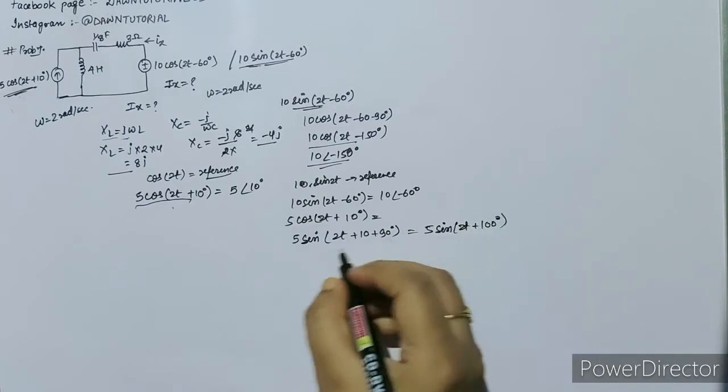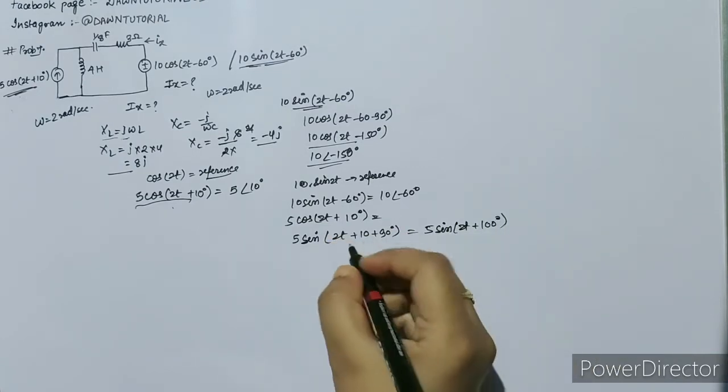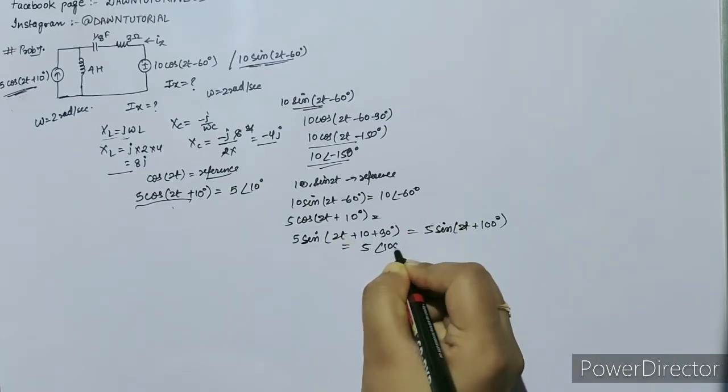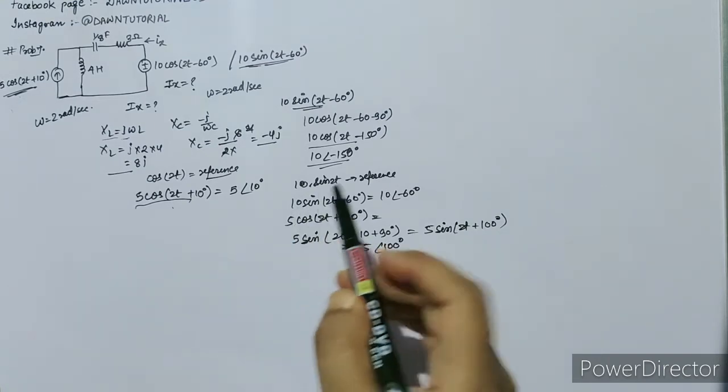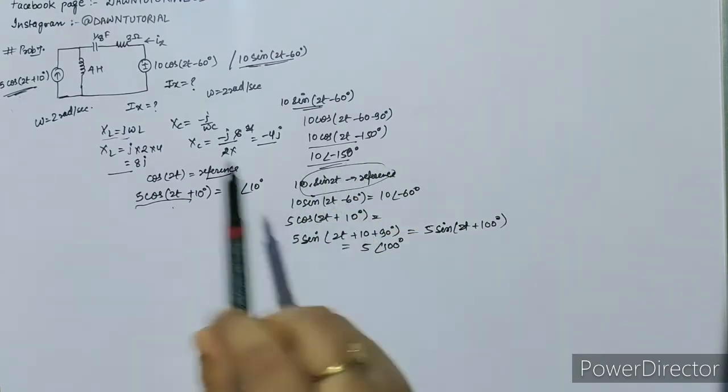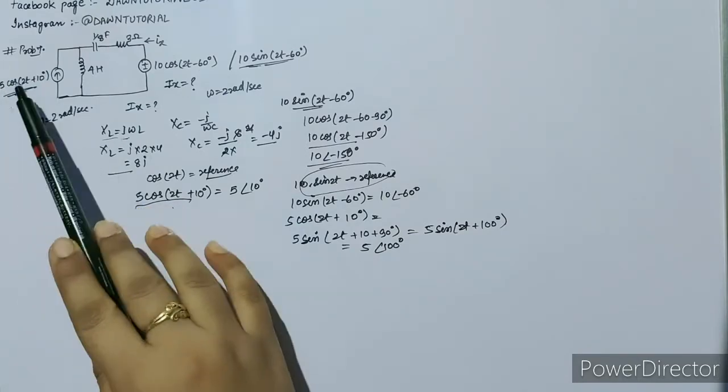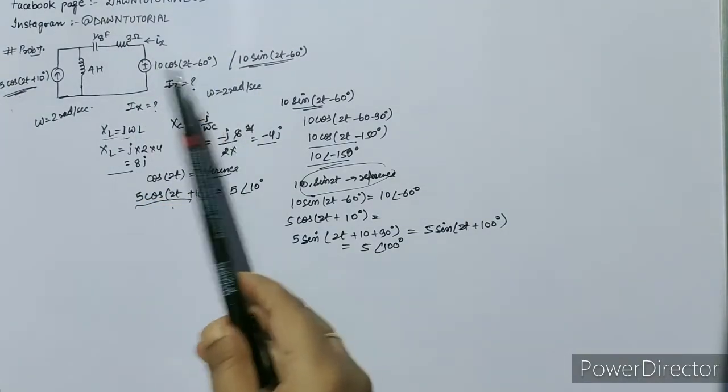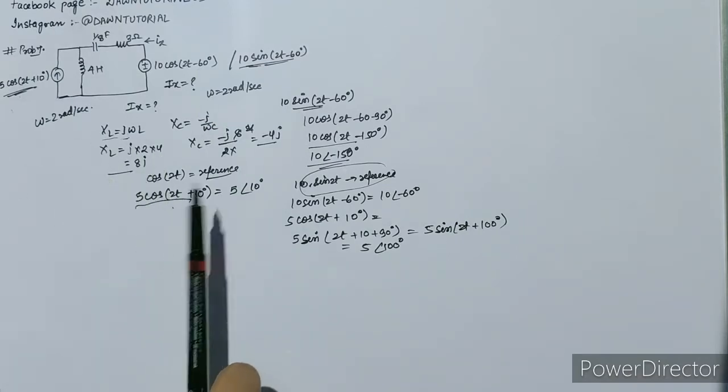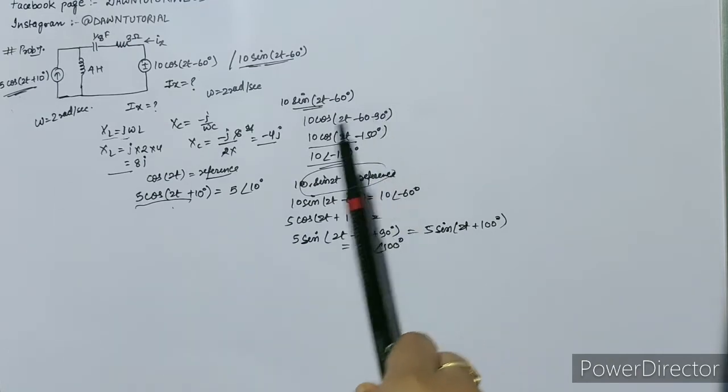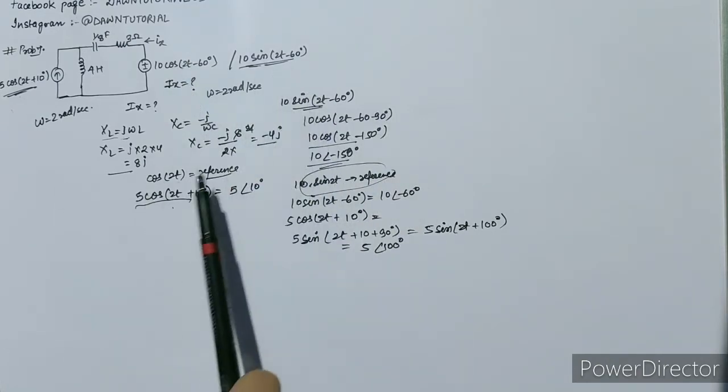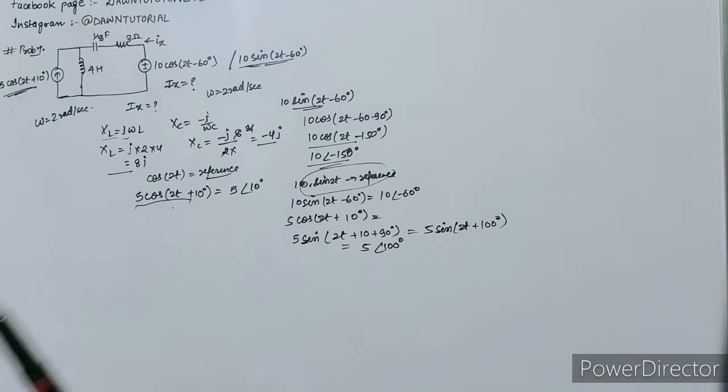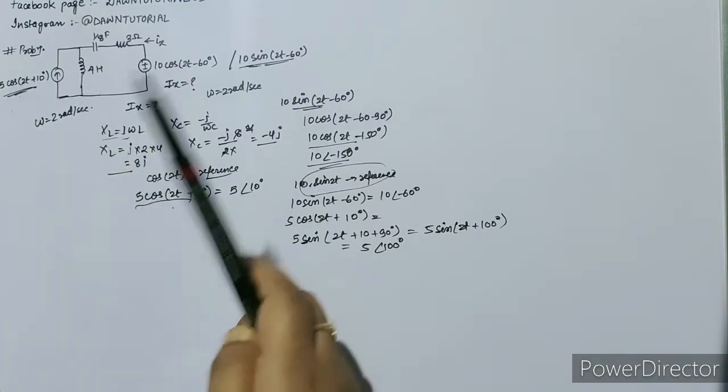So now change it to phasor domain: 5∠100°. So if these two are different, you have to take one reference, then correspondingly change the other in phasor domain, and then solve. You will take this as reference and get the same result.